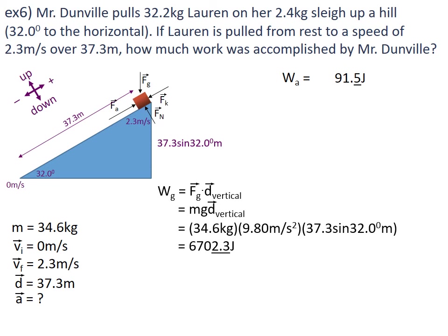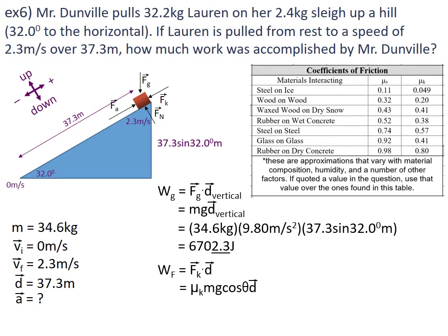Now let's establish how much work was done against friction. Work_friction equals F_k multiplied by d, and F_k equals μ_k·mg·cos θ. I don't have a μ_k value, so I will have to reference my data table. When I go to the data table, I would say that it's probably waxed wood on dry snow, giving a μ_k value of 0.41. The displacement happened over 37.3 metres.